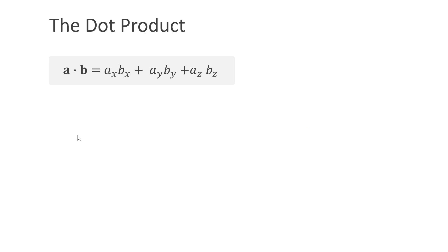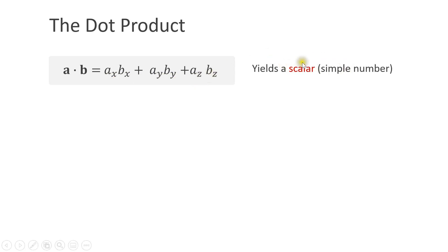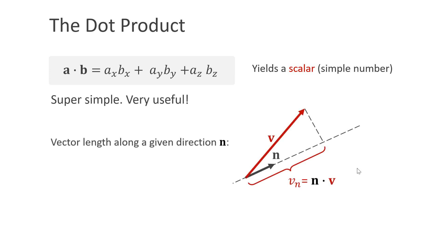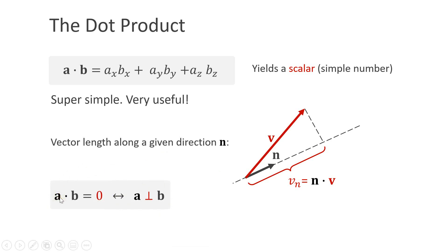The dot product is an operation between two vectors, written as a little dot. To compute it, we compute ax times bx plus ay times by plus az times bz. As you can see, the result is a scalar or a simple number — this is also the reason why the dot product is sometimes called the scalar product. It is super simple to compute and very useful. A first very important use case is to compute the length of a vector v along a direction defined by a unit vector n. To compute the scalar value vn, we simply take the dot product between n and v. A second important use case is to decide whether two vectors are perpendicular to each other — in this case, their dot product is zero.